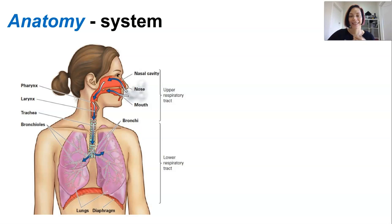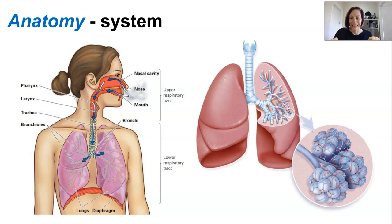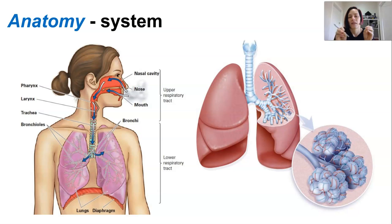The trachea has cartilage rings around it to keep it open as well as some smooth muscle. The bronchi are the two main branches that go into the lungs and have smooth muscles in the wall so they can contract if need be. The bronchioles are the smaller branches of the bronchi and also have smooth muscles in those walls.